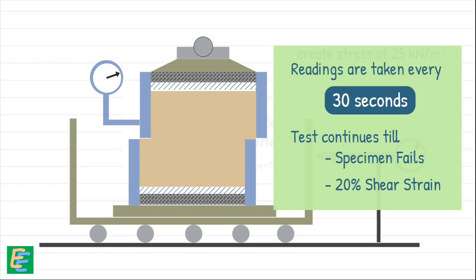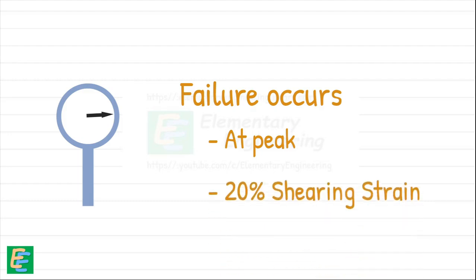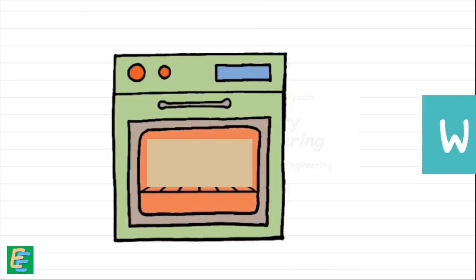The test continues until the specimen fails or reaches 20% longitudinal displacement, whichever occurs first. Failure occurs when the proving ring's readings begin to decrease after reaching a peak. For soils that don't show such a peak, failure is assumed at 20% shearing strain. At the end of the test, we remove the sample from the box and determine its water content.